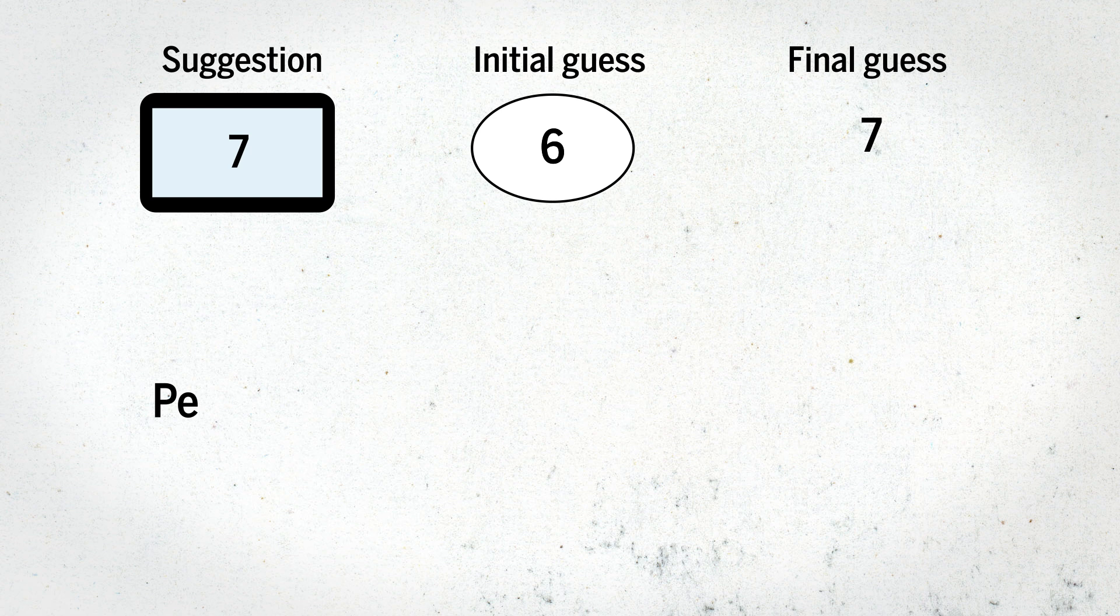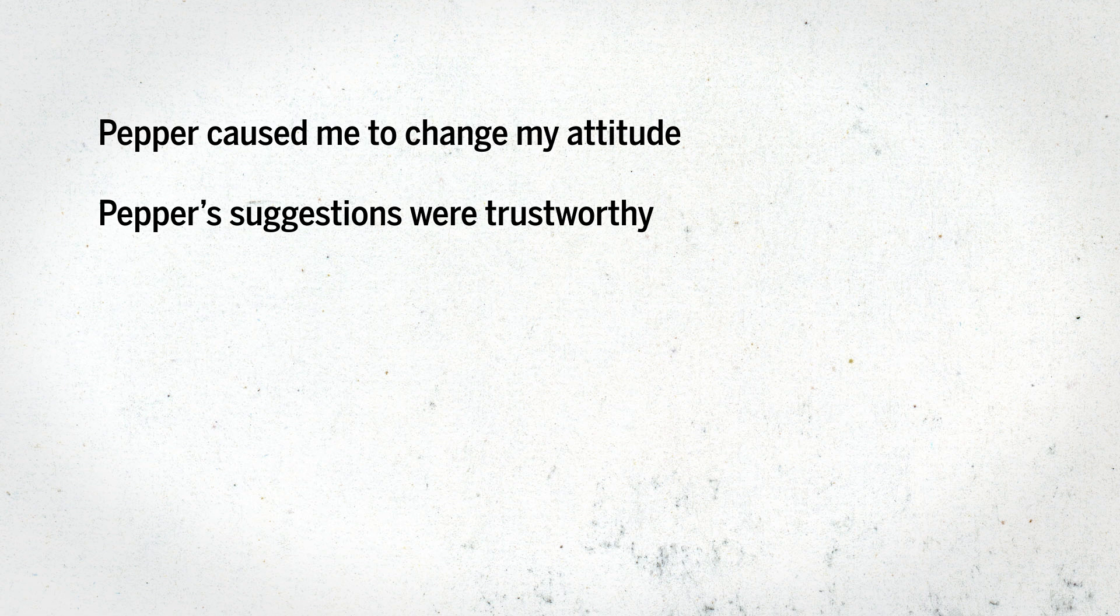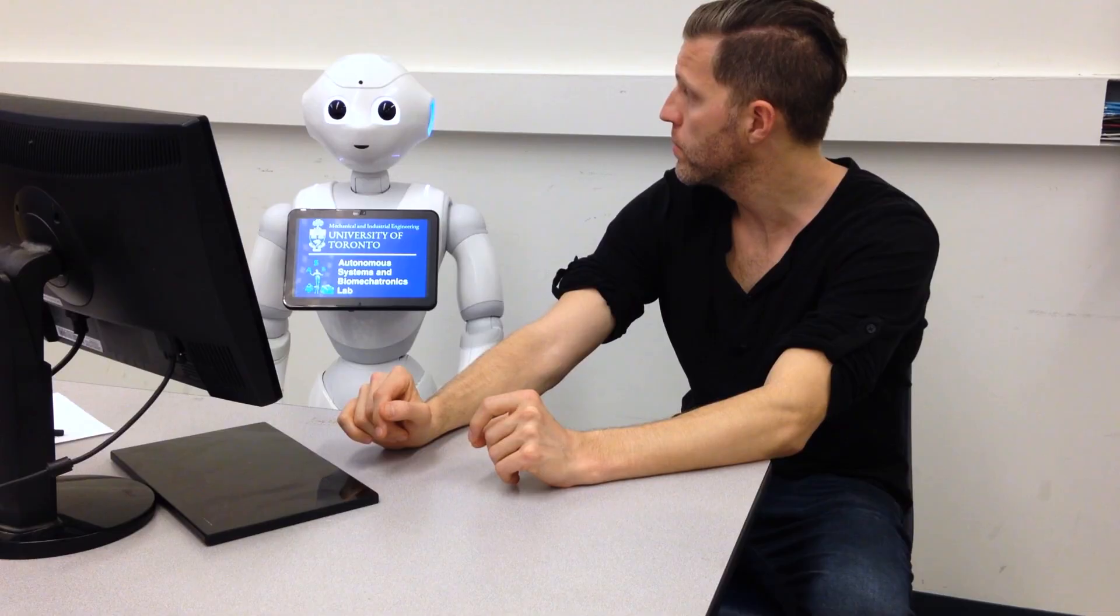The researchers measured Pepper's persuasiveness by calculating how the suggested guess influenced the final answer. Participants also completed a survey at the end of the study, where they rated statements about Pepper on a seven-point scale.